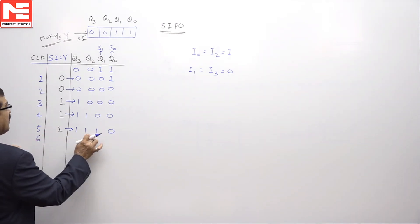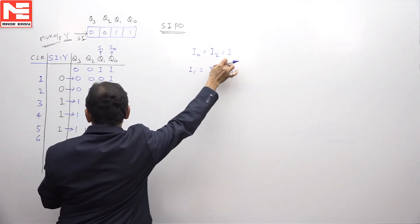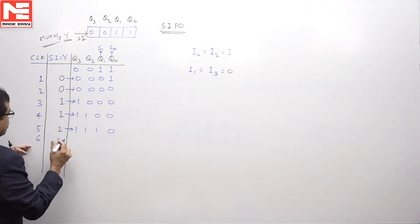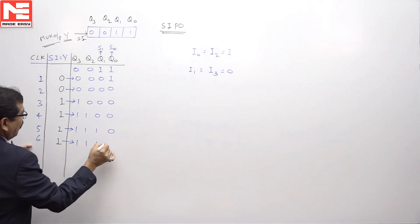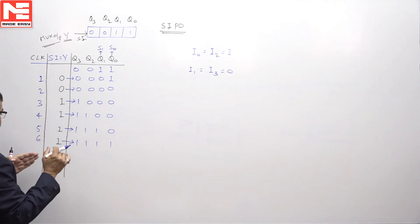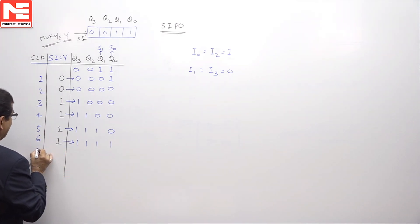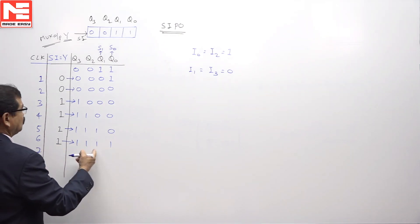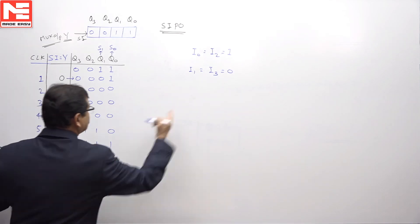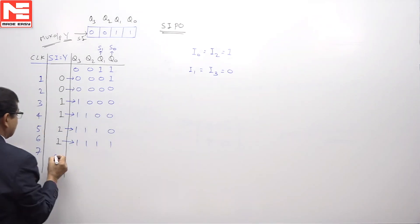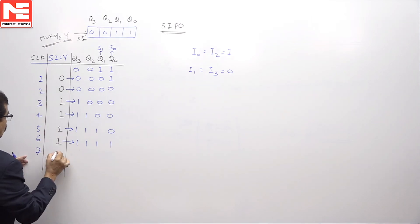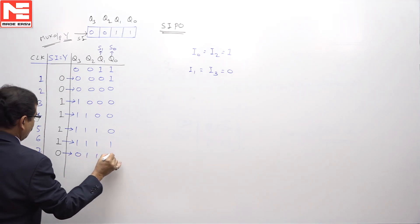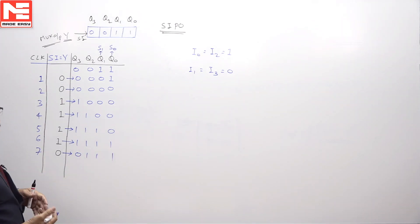Before the sixth clock pulse, S1 and S0 are 1 and 0, so the selection is for line 2. Line 2 is connected to 1, hence the serial input is 1. After the sixth clock pulse, all bits in the register are 1, 1, 1, 1. Before the seventh clock pulse, S1 is 1 and S0 is 1, so line 3 is selected. Line 3 is connected to 0, so after the seventh clock pulse the register reads 0, 1, 1, 1. Not the initial state.